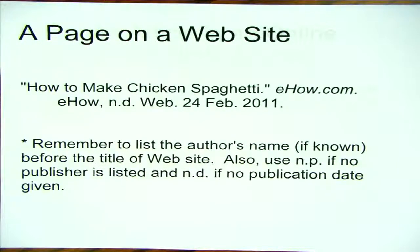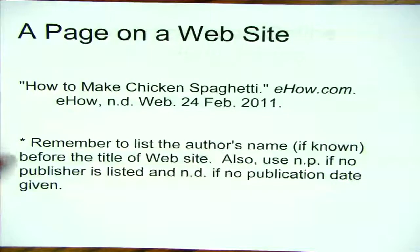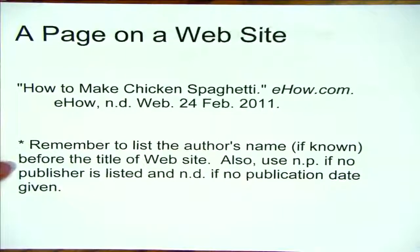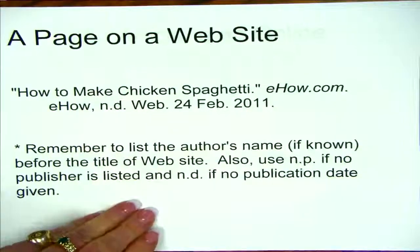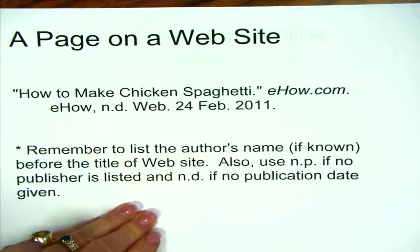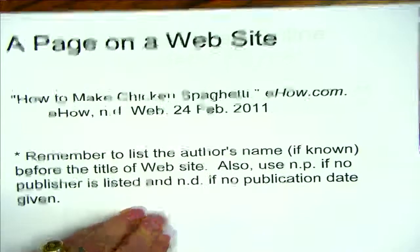The second thing you're going to want to look at is possibly a page on a website. Here I've given you an example — how to make chicken spaghetti from ehow.com. Remember, some of the new rules are: if there's no date on the website, you want to put N period D period to indicate no publication date given. Same thing with a publisher — N period P period means no publisher.